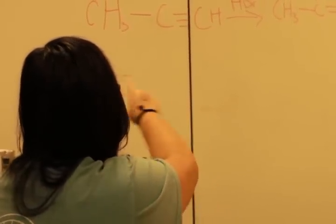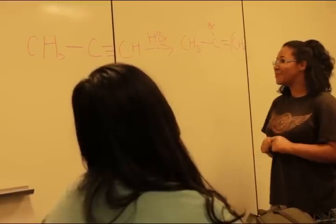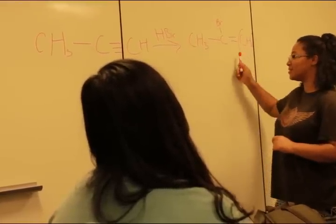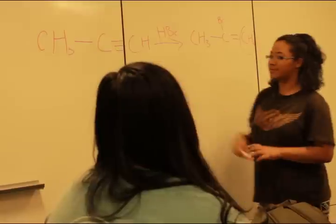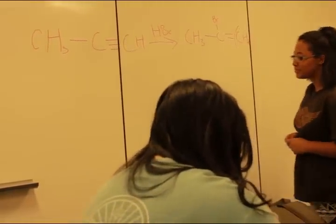If you bond it to the C with the most H's, then why didn't you bond it to the CH3 instead? Because you have to make a bond on the C's within the triple bond, so it would have to be within the C. Okay. That makes a lot more sense now.